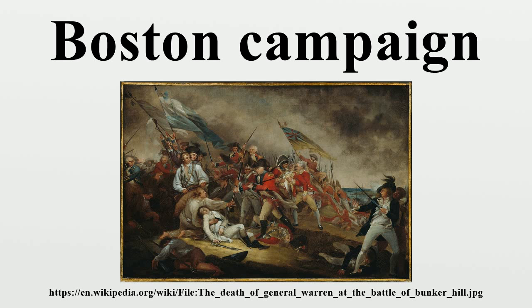The Second Continental Congress, meeting in Philadelphia, had received reports of the situation outside Boston when it began meeting in May 1775. In response to the confusion over command in the camps and the May 10 capture of Fort Ticonderoga, the need for unified military organization became clear. Congress officially adopted the forces outside Boston as the Continental Army on May 26, and named George Washington its commander-in-chief on June 15. Washington left Philadelphia for Boston on June 21, but did not learn of the action at Bunker Hill until he reached New York City.